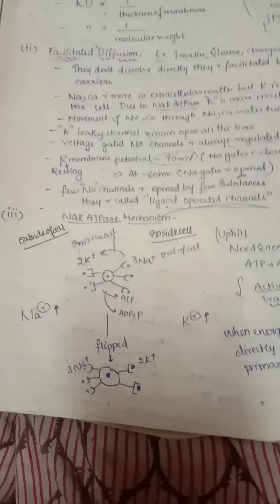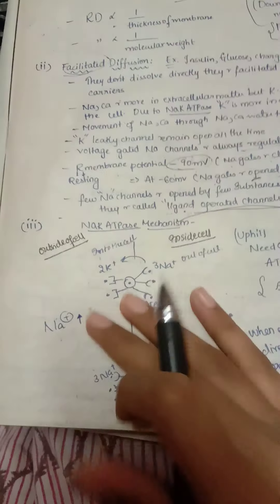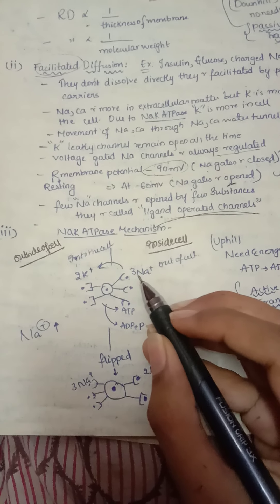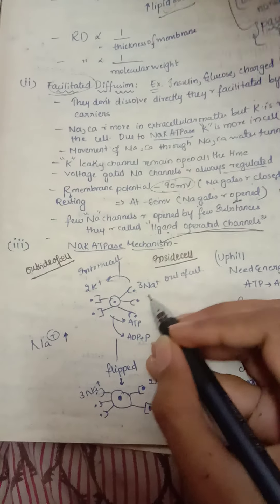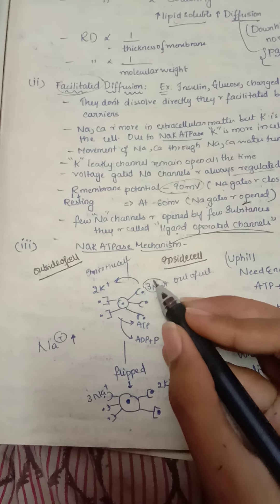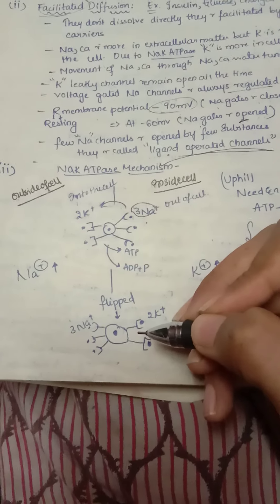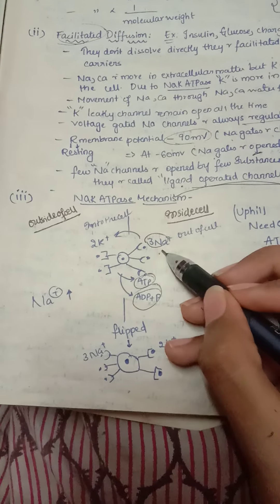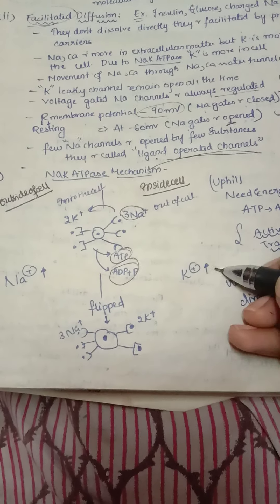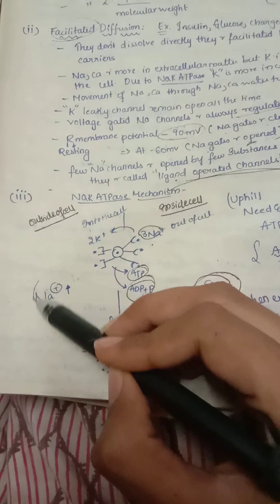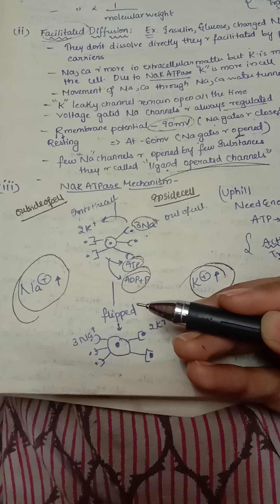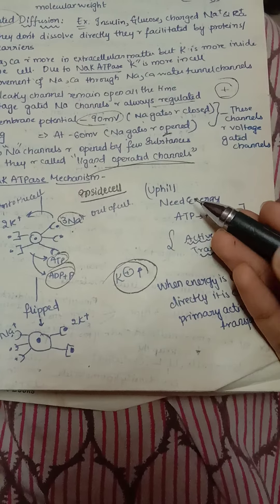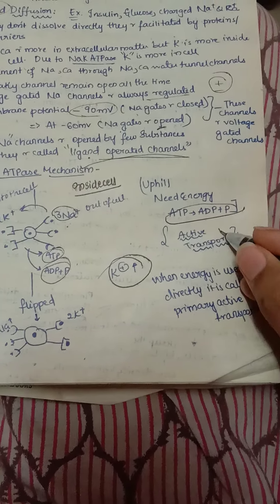Now let us look at the sodium-potassium ATPase mechanism. Inside the cell, three sodium ions are taken out by a flipping process, which requires energy. ATP is broken down into ADP and phosphate, and by this energy the pump shifts — three sodiums come outside and two potassiums come inside. This results in high potassium inside the cell and high sodium outside the cell.